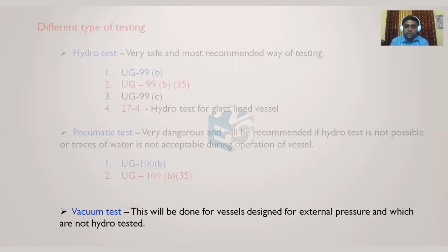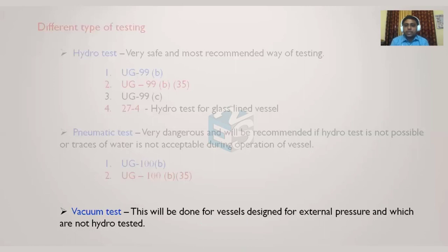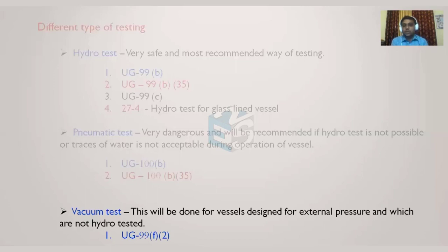If the customer requires a vacuum test for external pressure, clause UG-99F2 applies. It is important to remember that even with external pressure or vacuum conditions, a vacuum test is not always required — the code provides an alternative under UG-99F1 allowing a hydrostatic test. UG-99F2 governs cases where vacuum testing must be performed.